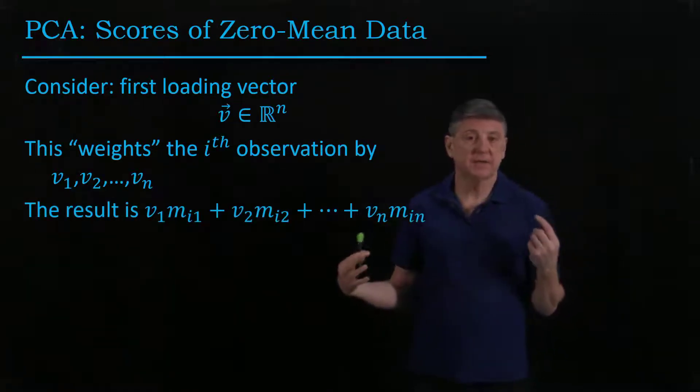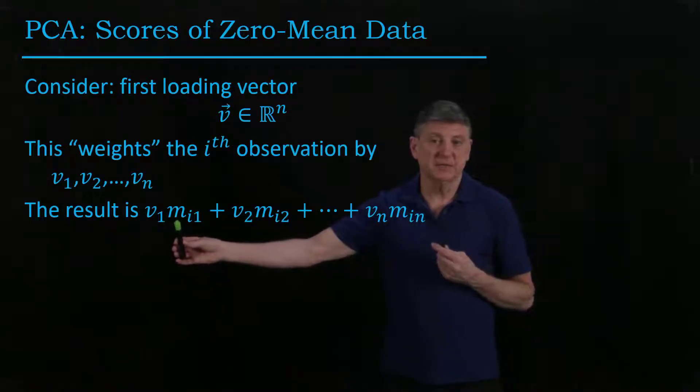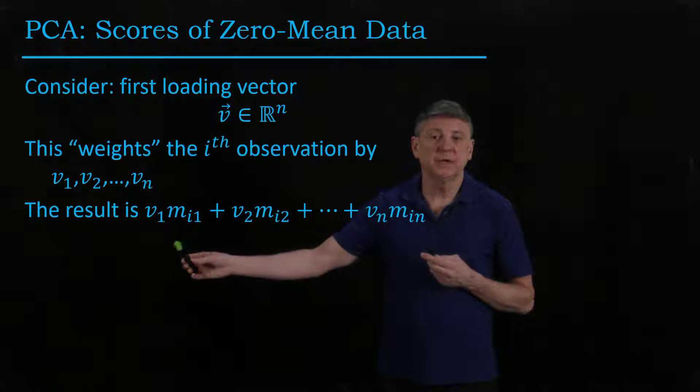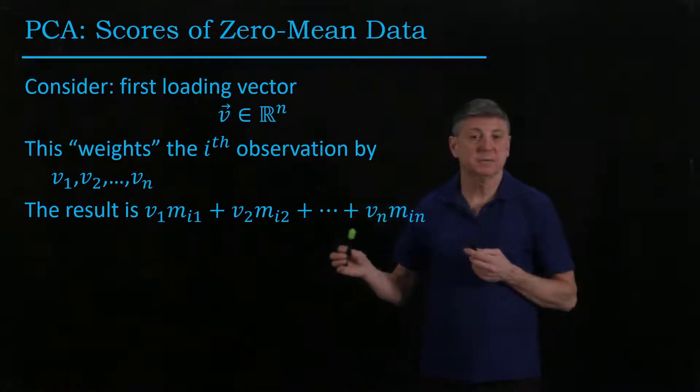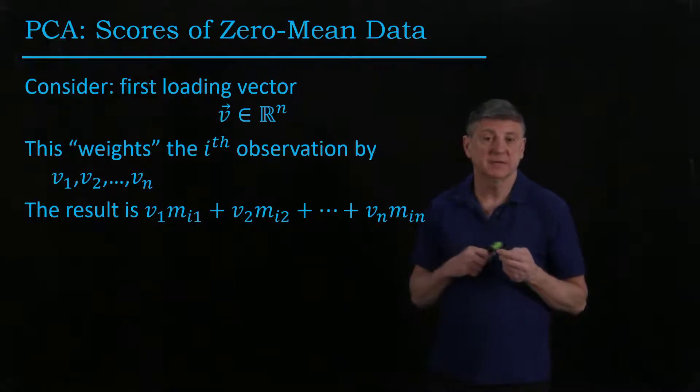If we take the ith zero mean observation, which is in our matrix M, we're calculating a weighted sum of these observations, and the weights are coming from the entries of this eigenvector.